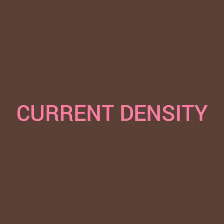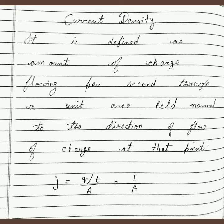We are going to discuss a very interesting topic: current density. Current density is the amount of charge flowing per unit time per unit area, held normal to the direction of flow of charge at that point. Current density kya hoga — it is just the amount of charge flowing per unit time per unit area normal to the direction of charge.